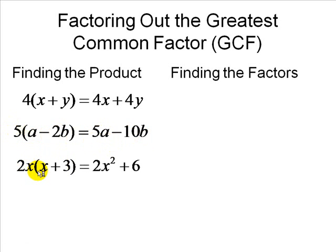Here we have 2x times x plus 3. 2x is a factor, then x plus 3 is a factor. Therefore, we multiply these two factors using the distributive law, where we distribute 2x between these two terms x and 3. Therefore, 2x times x is 2x squared, and 2x times 3 is 6. Let's find the factors.